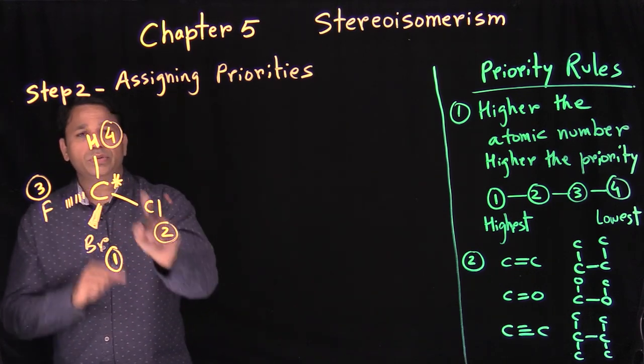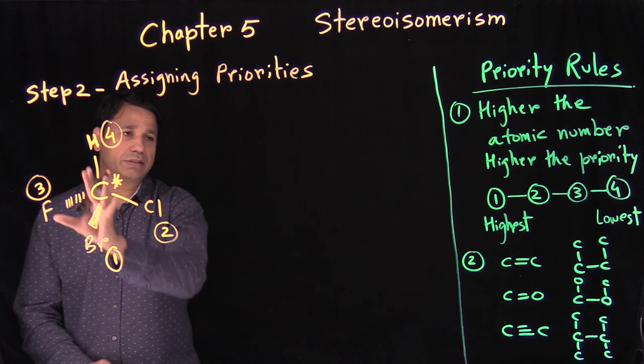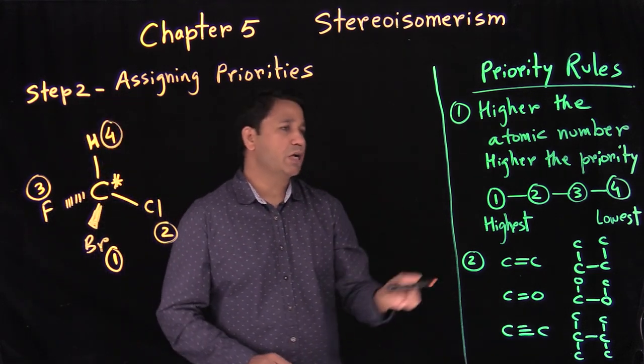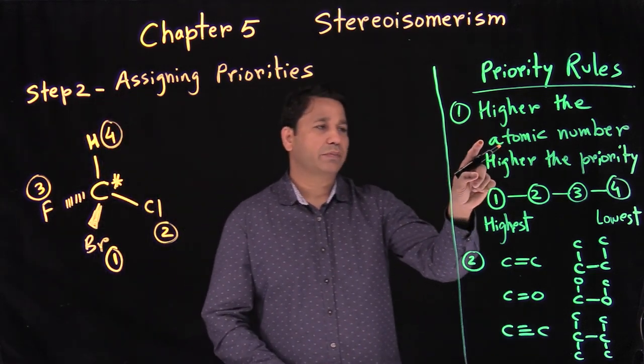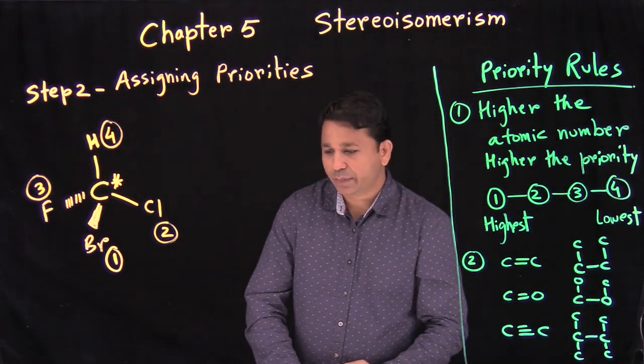So we have one, two, three, and four — that's how you assign the priorities. Again, what you're looking at is the atomic number: higher the atomic number, higher the priority.